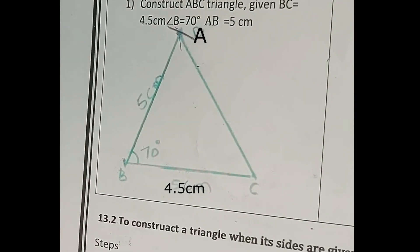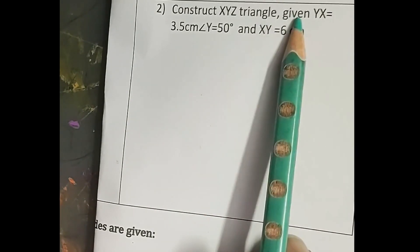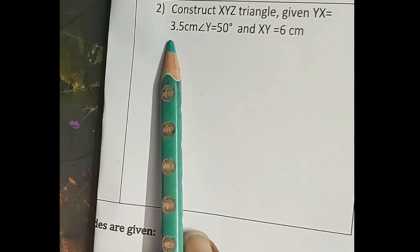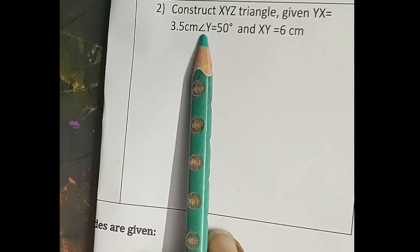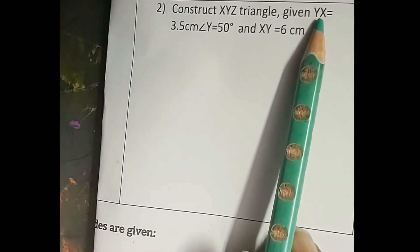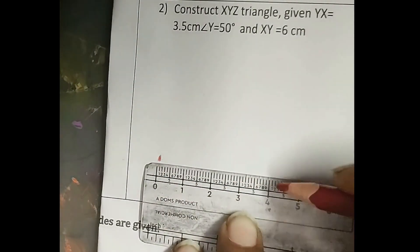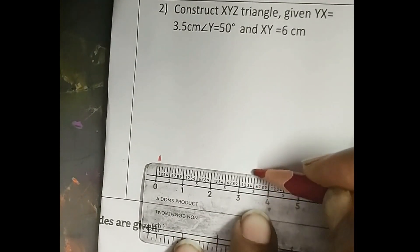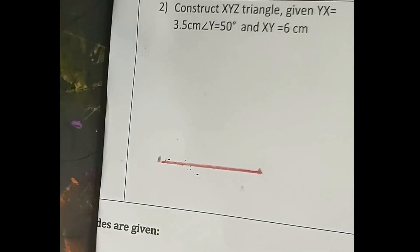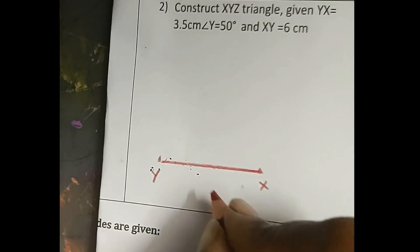Let's move to the next one. The second question is: Construct triangle XYZ given YX is 3.5 cm, angle Y is equal to 50 degrees, and ZY is 6 cm. First we draw YX of 3.5 cm. We point on 0, then 3, and 3.5 is here. Draw a line. This is YX, 3.5 cm.